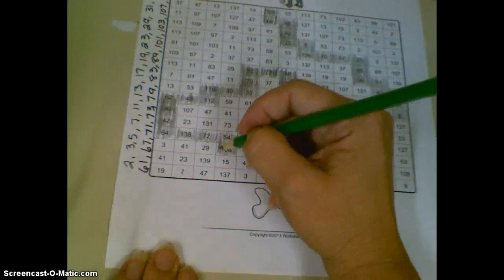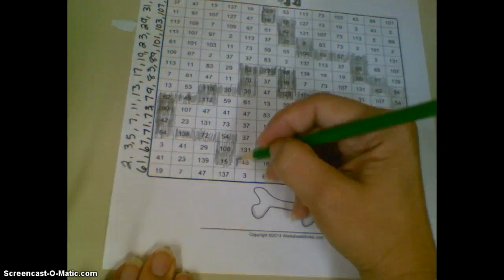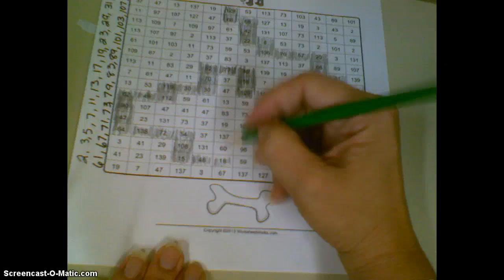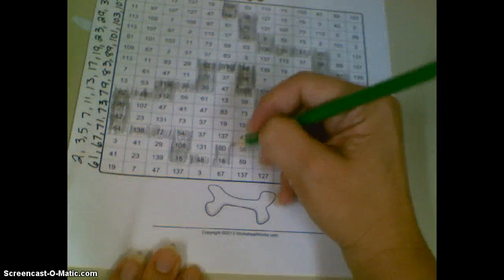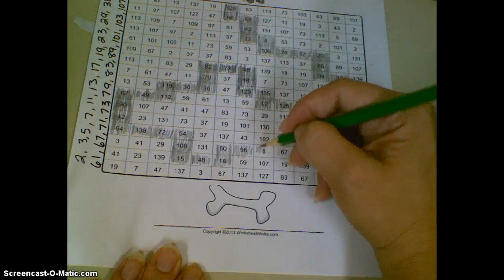15, I bet you know this one. 5 times 3 is 15. Here's an even one. Even numbers are composite, remember? 18 is composite. 60 is composite. 96, composite. 8 is composite.